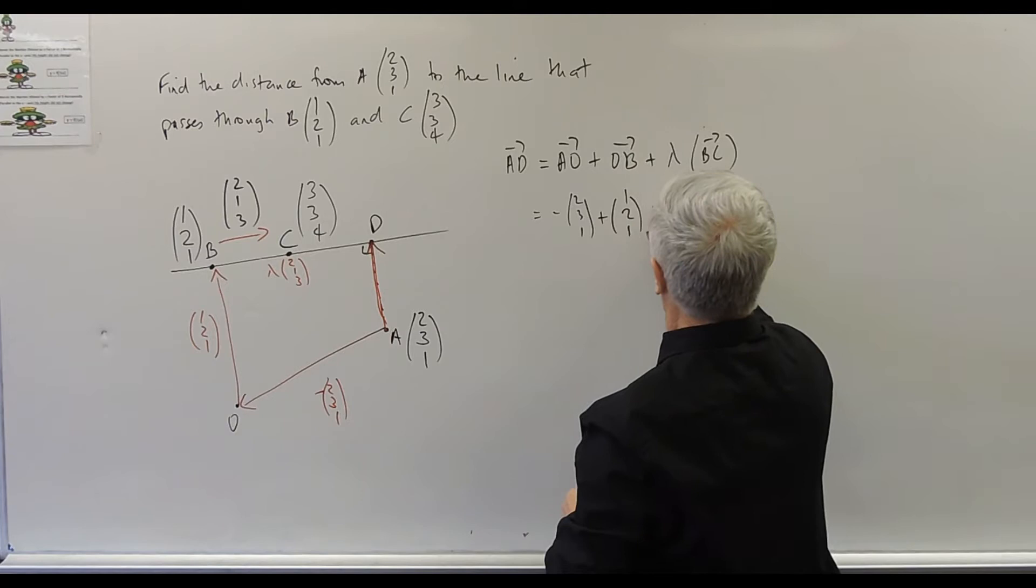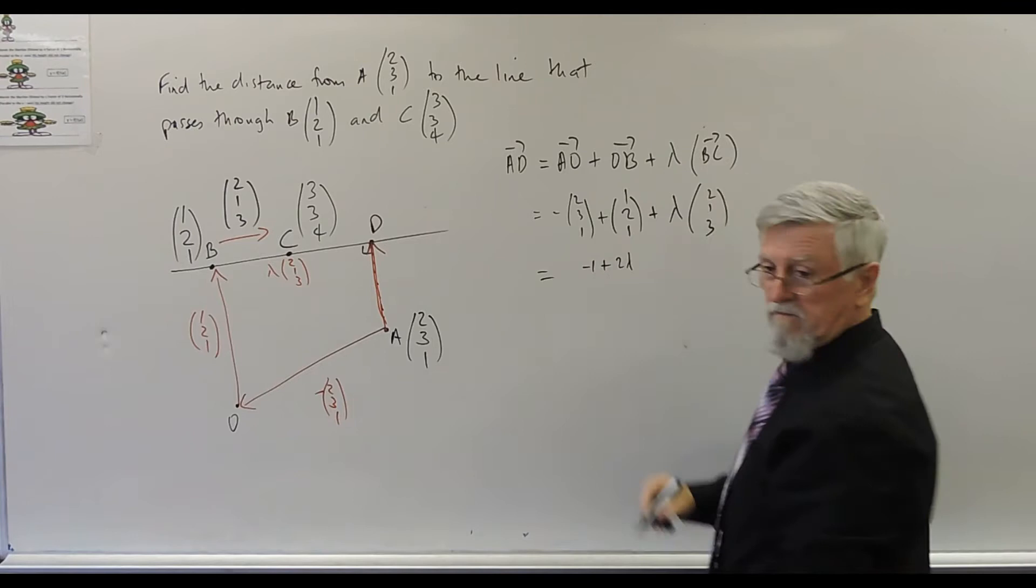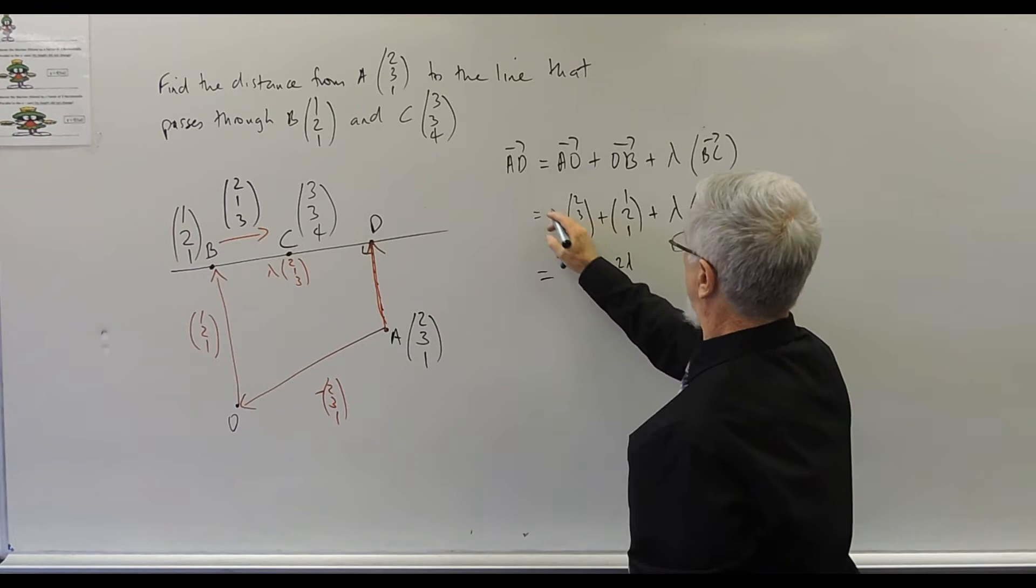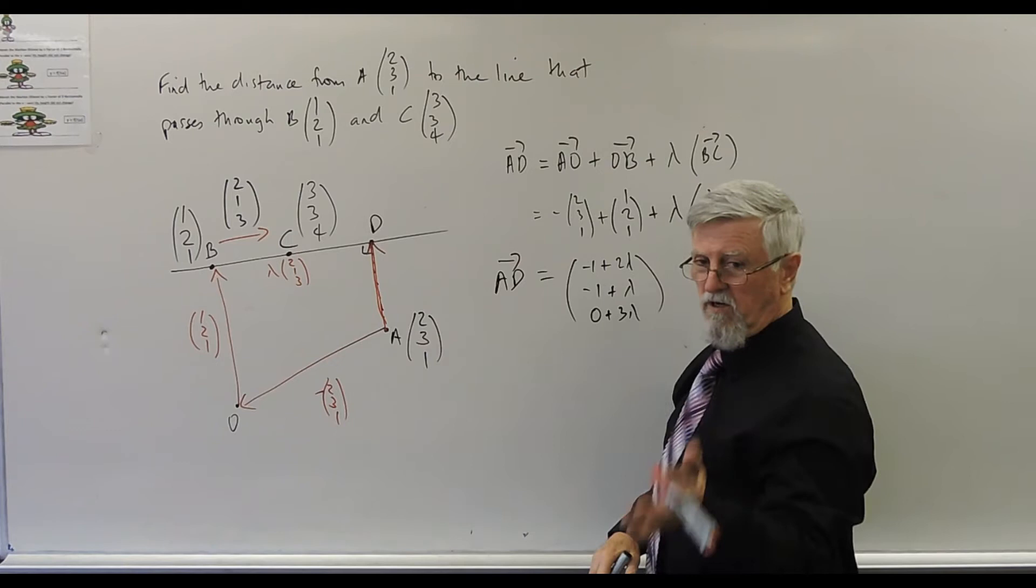Could tidy that up. And could just go minus 2 plus 1. So it's minus 1 plus 2λ. That'll be minus 3 plus 2, minus 3 plus 2 is minus 1 plus λ. That'll be minus 1 plus 1 is zero. Zero plus 3λ. So I don't have to write zero, of course. And that's AD. That's vector AD, not equation of line AD. It's vector AD.